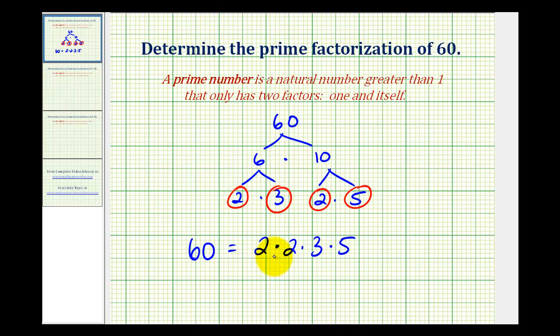Using exponents, we could write 2 times 2 as 2 to the second, or 2 squared. So in exponent form, we would have 2 squared times 3 times 5.